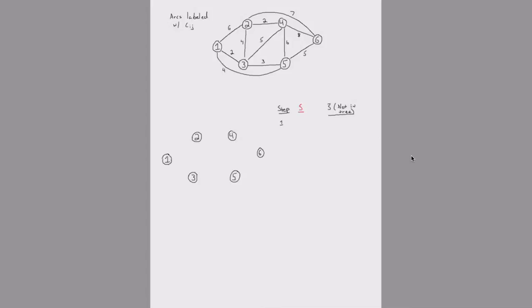What we're doing in this video is applying Prim's algorithm to determine the minimum spanning tree in the following network. All the arcs are labeled with their costs. Prim's algorithm essentially builds the minimum spanning tree from scratch by iteratively adding nodes into the tree. It leverages the cut optimality conditions.